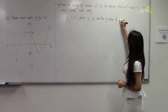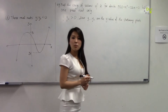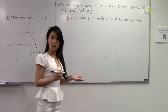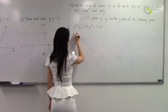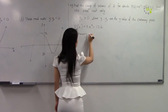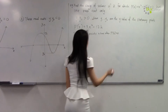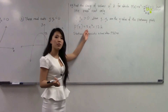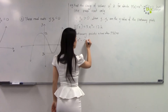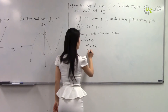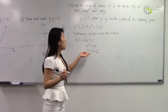The first step is to find the x-values of the stationary points, so let's differentiate. The derivative equals 3x² - 12k. Stationary points occur when p'(x) = 0, giving us the x-values of our stationary points.